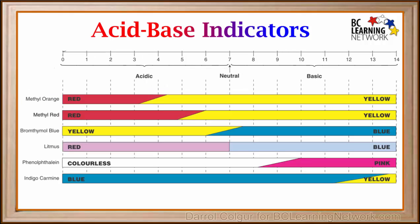Other indicators have different colors at different pHs. Some of these are shown here. Notice that at pH of 2.5, methyl orange, methyl red and litmus are red. Bromthymol blue is yellow, phenolphthalein is colorless, and indigo carmin is blue.